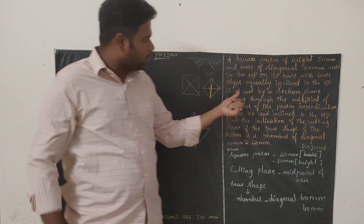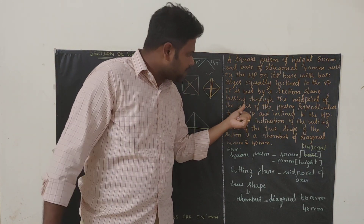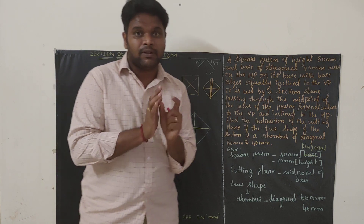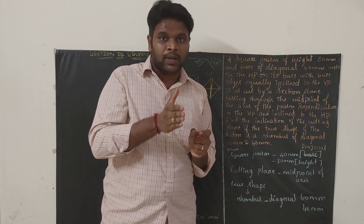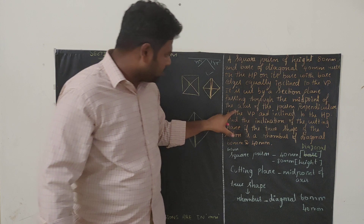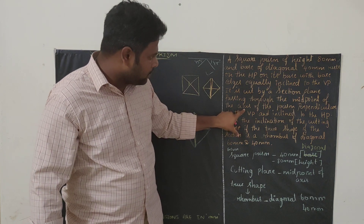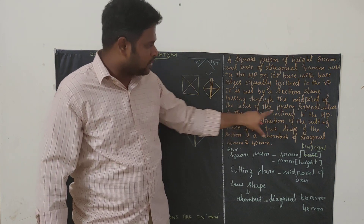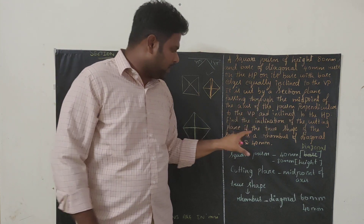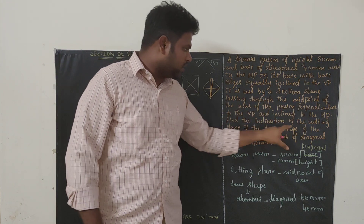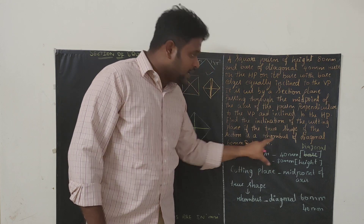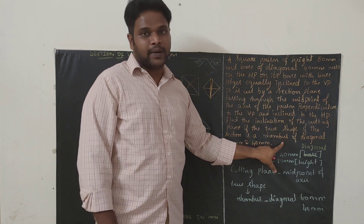Regarding the cutting plane: it is cut by a section plane passing through the midpoint of the axis of the prism. The cutting plane will be perpendicular to VP and inclined to HP. The question asks us to find the inclination of the cutting plane if the true shape of the section is a rhombus.